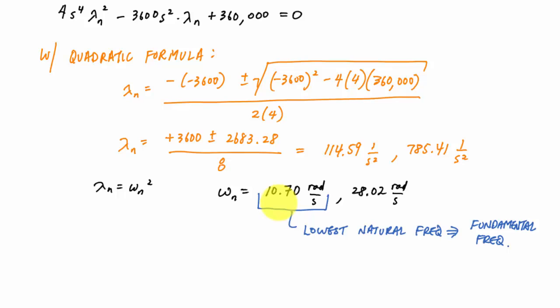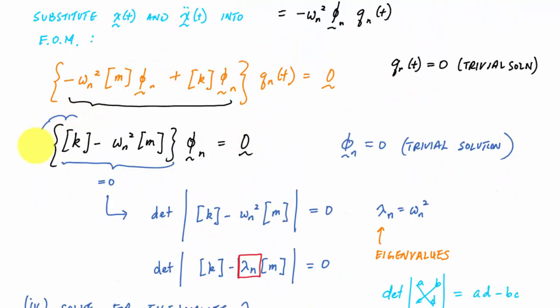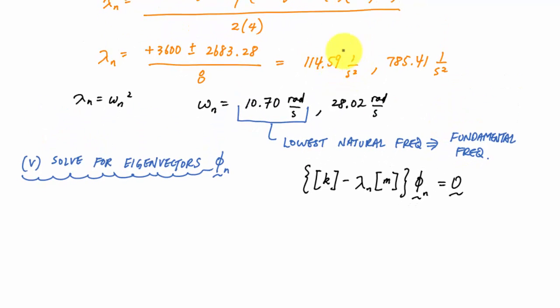Next, I'm going to go back and utilize this relationship to determine my eigenvectors, which are these mode shapes, this phi n. To solve for the eigenvectors or mode shapes, I'm going to take the eigenvalues one by one. I'll take 114.59, this first eigenvalue, substitute it in here—I have k, I have m—and then solve for phi n, which is a vector with two values.